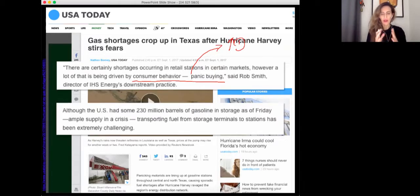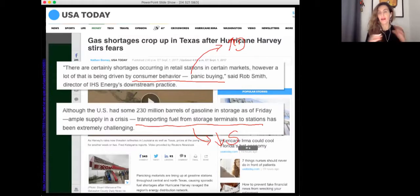On the other hand, we also see, and this is very common as well, a disruption in supply. Transporting fuel from storage terminals to stations has been extremely challenging. Basically, gas stations would be running out of gas because there just wasn't enough gas available. What we see here then is a decrease in supply. At any level of the price, sellers are able to sell a smaller amount of gas than they were selling before.